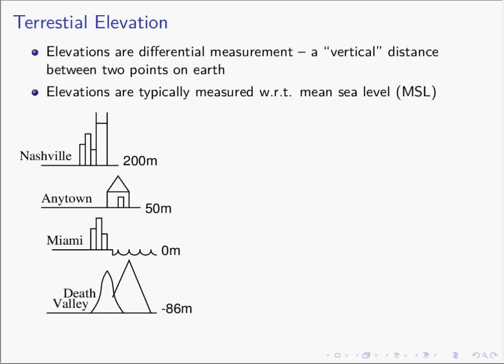Terrestrial elevations are measures of the distance between two points on Earth — specifically the vertical distance between these two points. On Earth, terrestrial elevations are measured to the same reference point all the time, and that is the elevation of sea level, because the ocean is a convenient reference. Of course, sea levels rise and fall with the tides, so we use a number called the mean sea level.